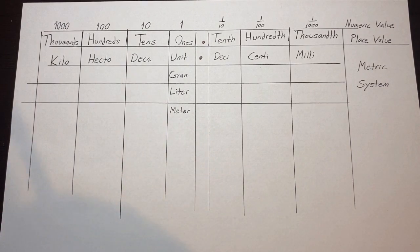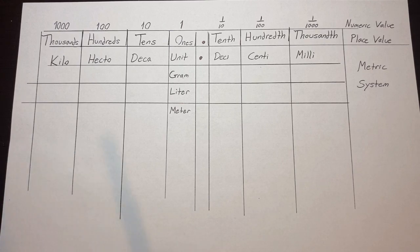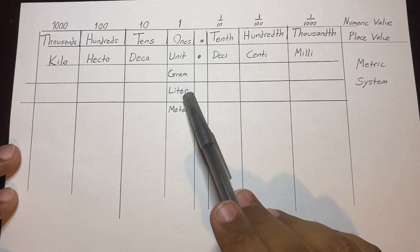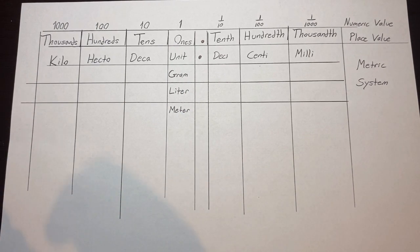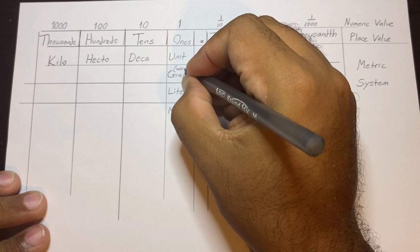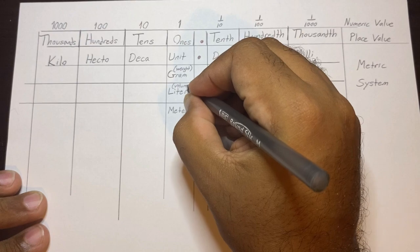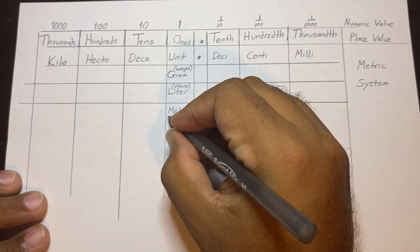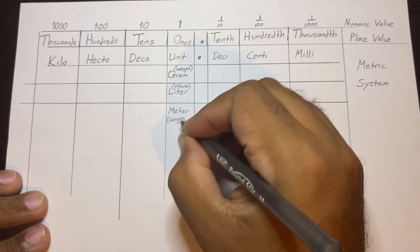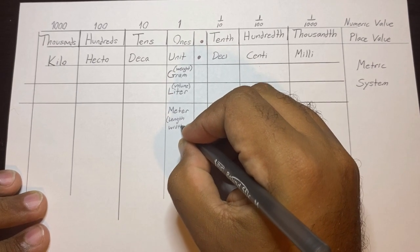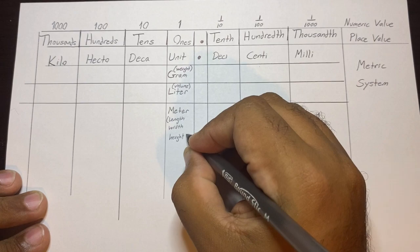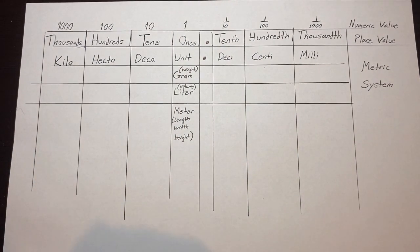In the imperial system, which is mostly used in the United States, we go by inches, yards, feet, pounds, fluid ounces, and so on. The metric system is different — it utilizes grams, liters, and meters. Grams are used for weight, liters are used for volume, and meters are used for length, width, and height. That's pretty much the difference.